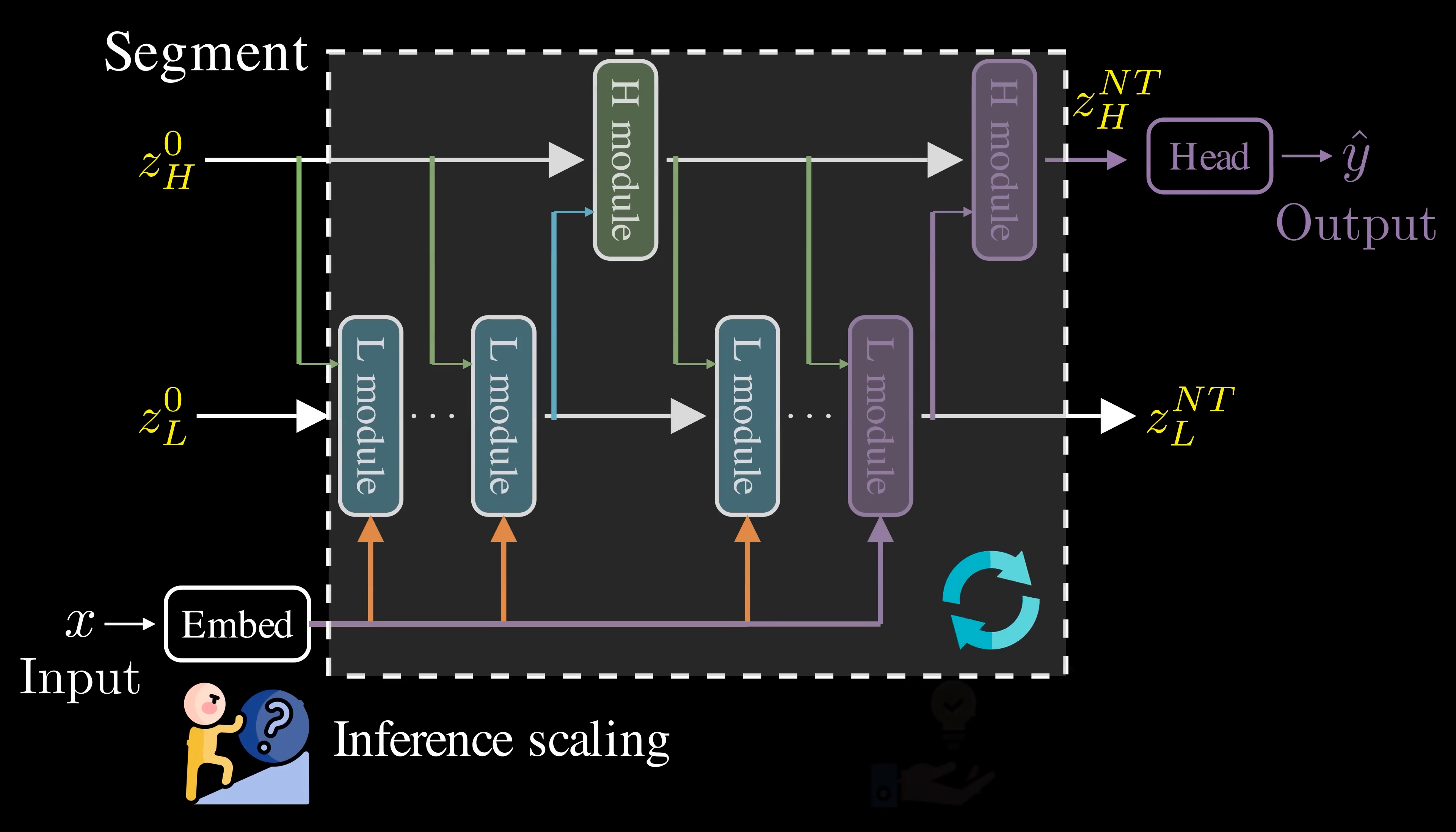To make the training tractable, the paper uses deep supervision. This means that the gradients from each segment are prevented from falling back into previous segments. By doing so, the model uses a one-step gradient approximation within a recursive deep supervision setup.